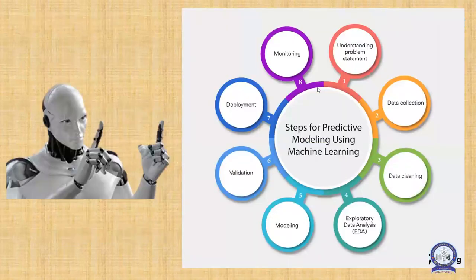There are certain steps in predictive modeling using machine learning. The first step is understanding the problem statement, followed by data collection, data cleaning, exploratory data analysis, modeling, validation, deployment, and monitoring.